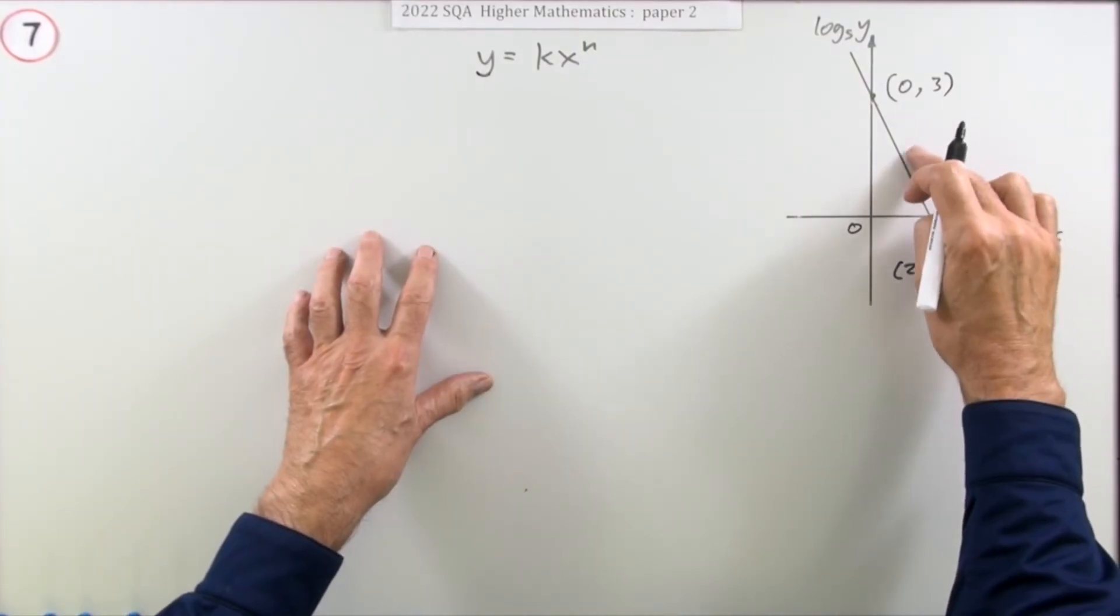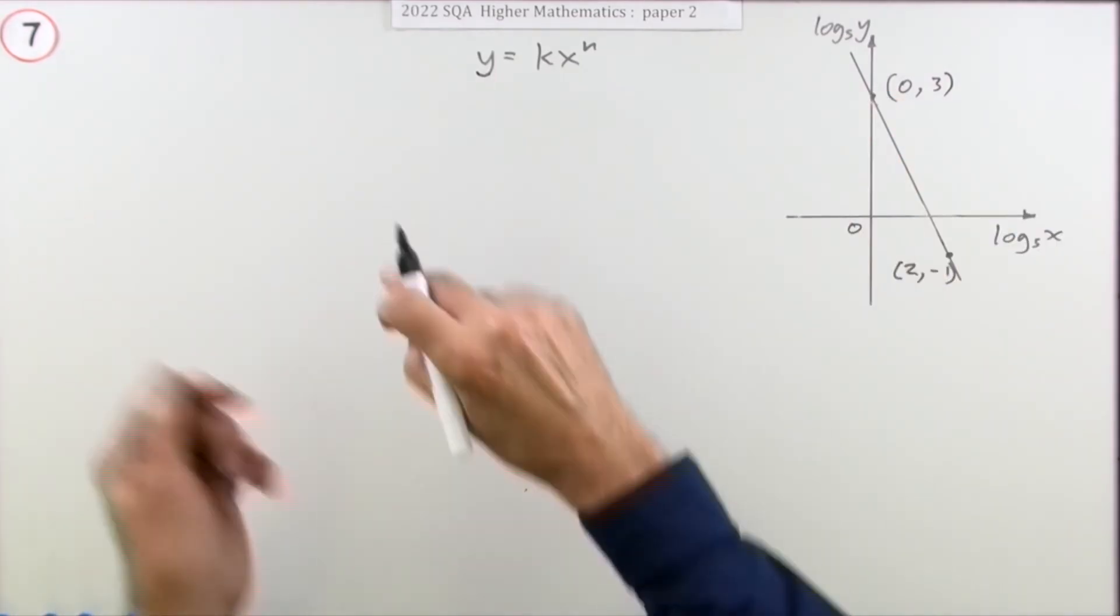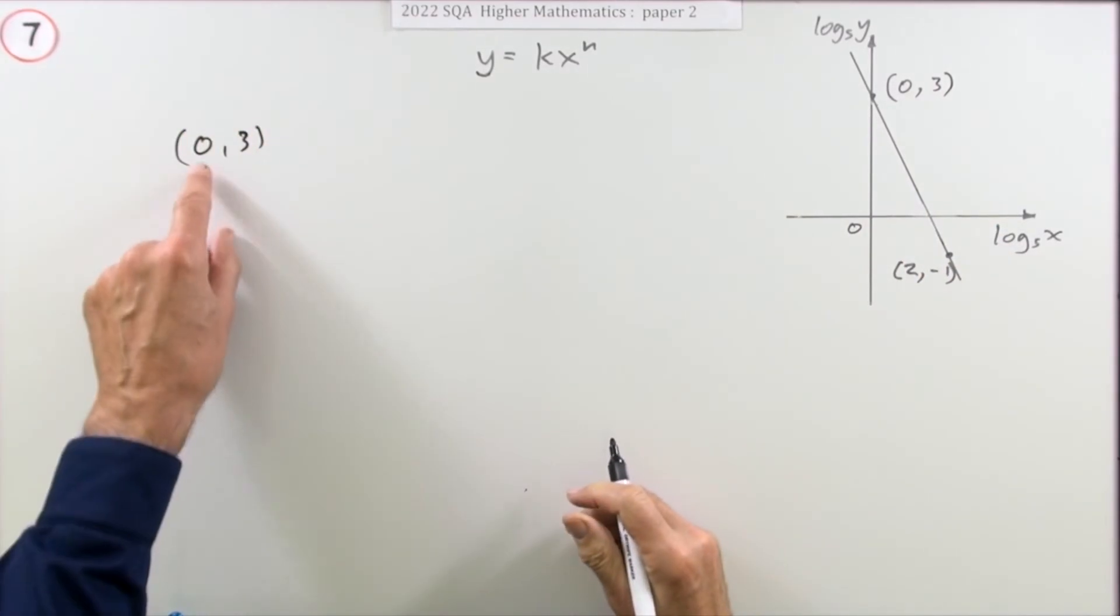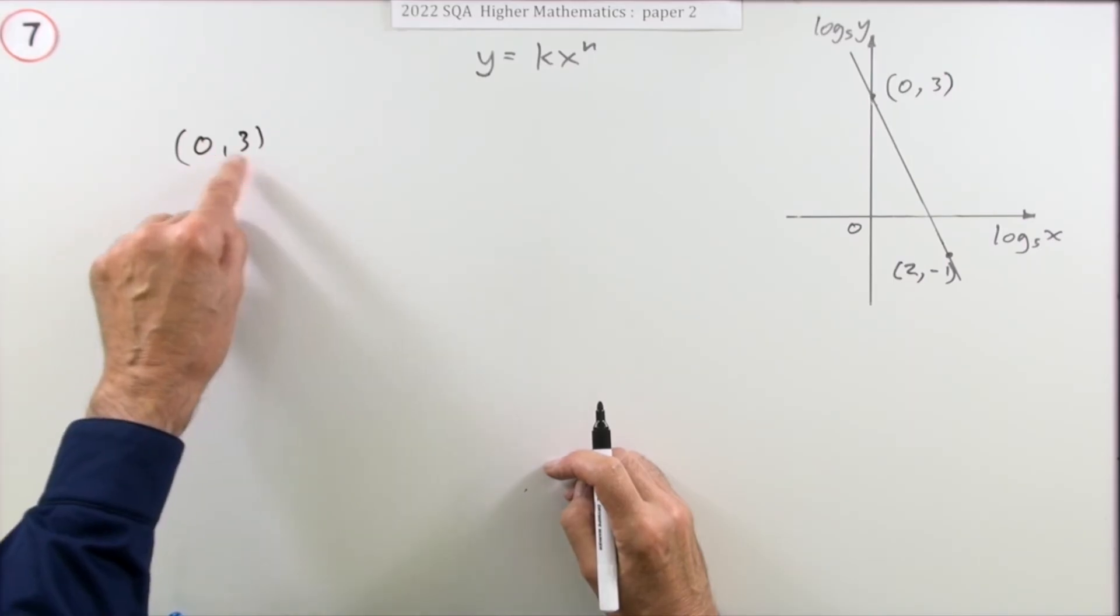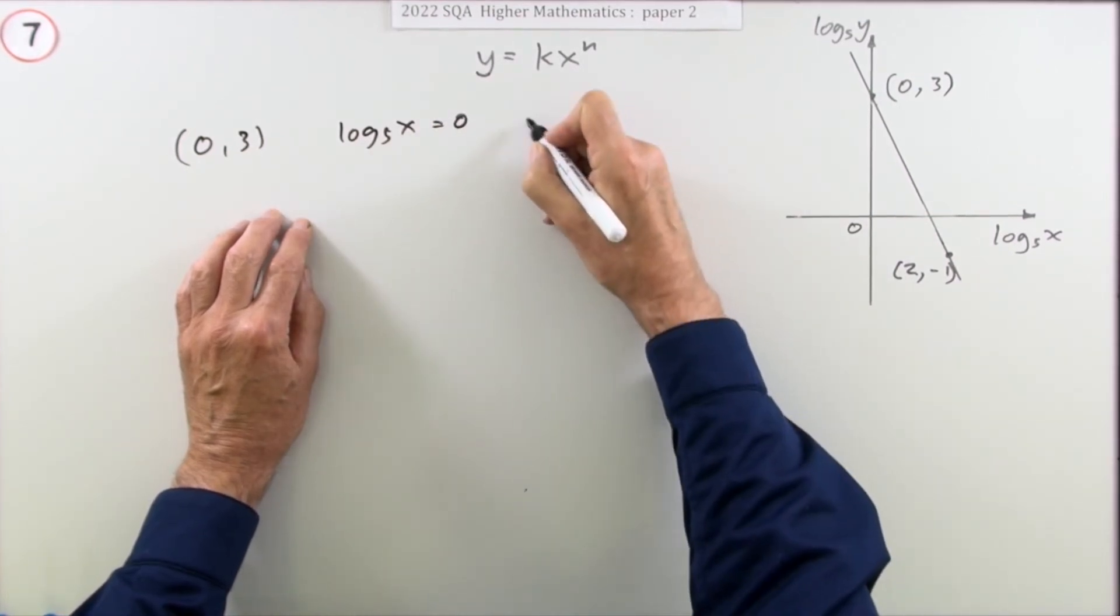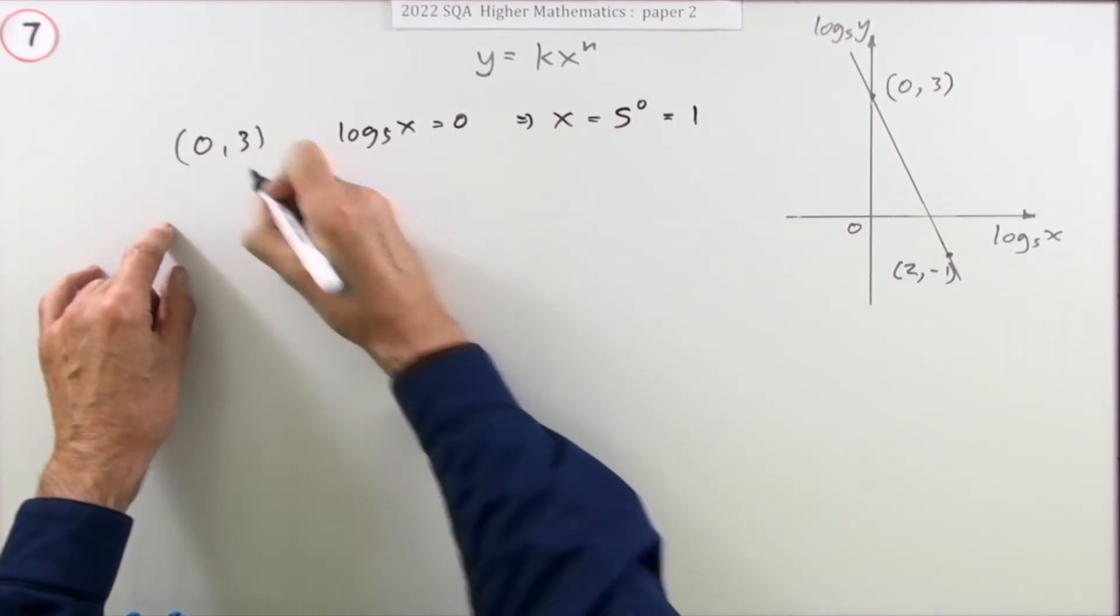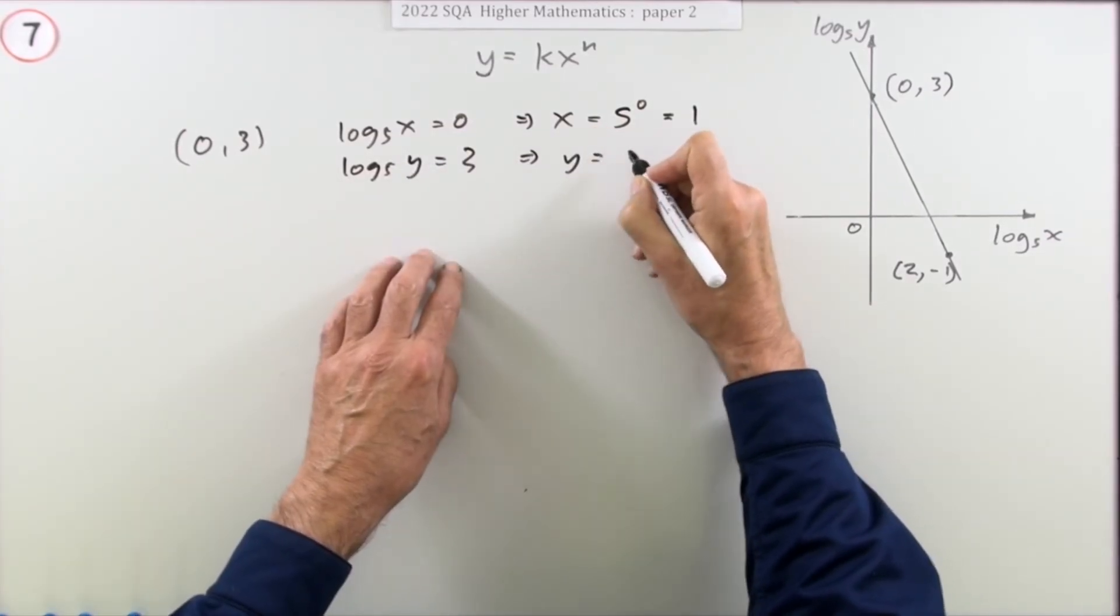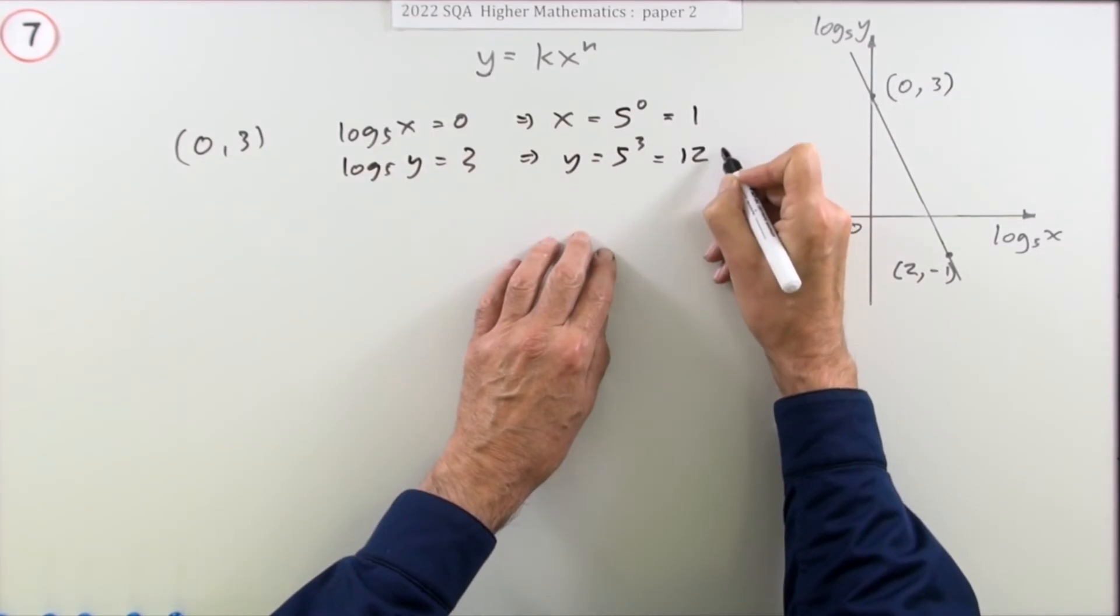Now the other method which doesn't involve the fact that you've got a straight line, and so you identify the features of the line, it's just to go back to the original data. The point (0, 3). What were the original values of x and y? And then I could pop it into this. Well remember those were logarithms. So the x, so log base 5 of x was 0. Well that means that that original x was 5 to the power 0, which is just 1. And the 3, that log base 5 of y was 3, so that means that that y was 5 to the power 3, which you could leave like that, it could be handy, but I'm just going to multiply it right out, which is 125.